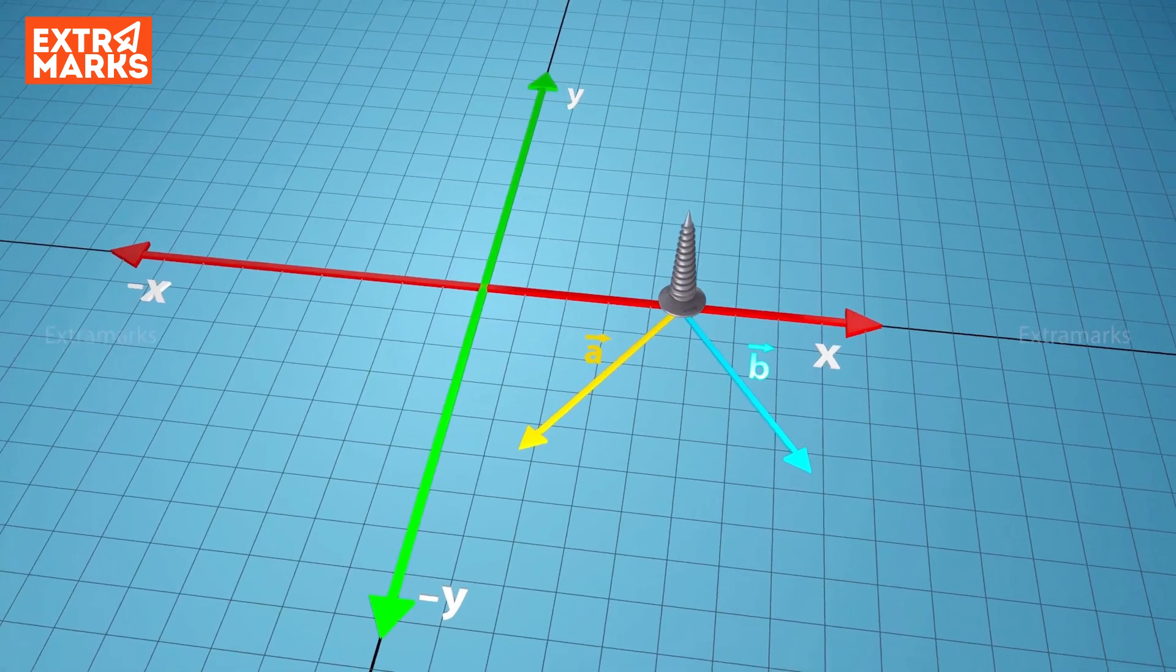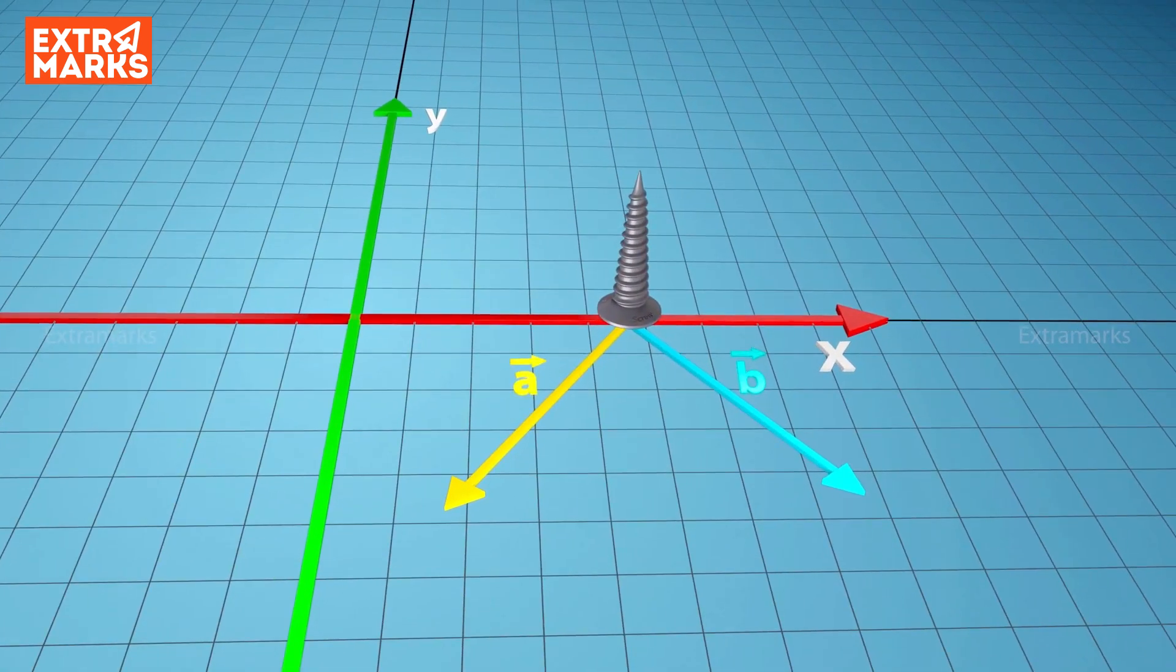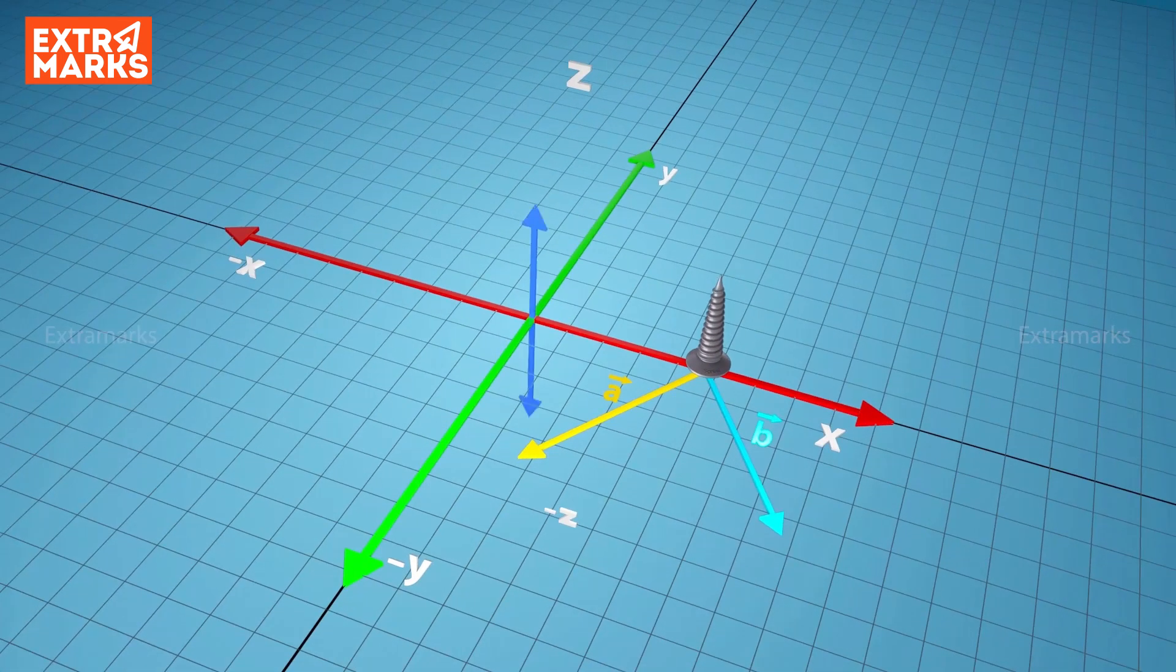Take a right-handed screw perpendicular to the plane of vector A and B, i.e. along Z-axis.